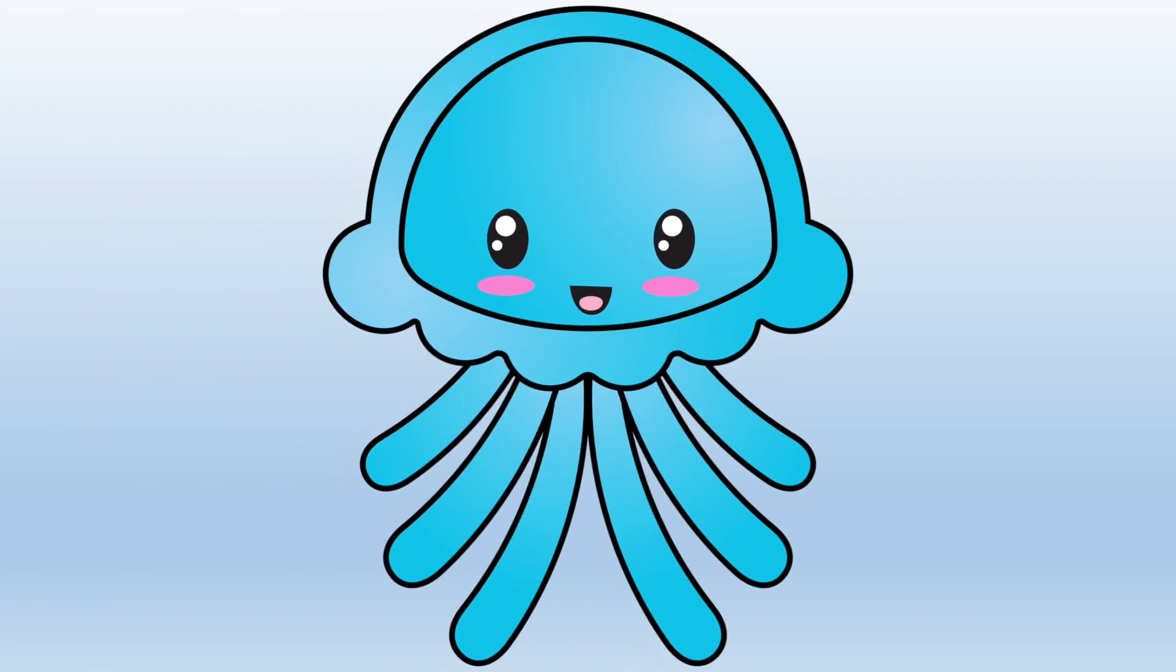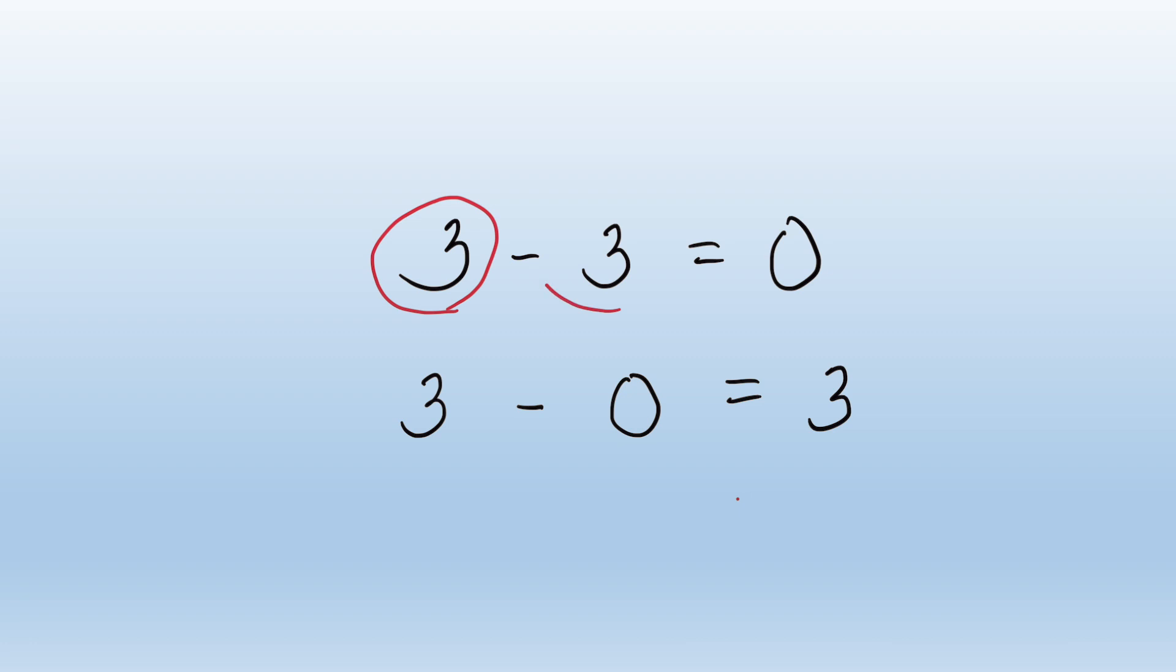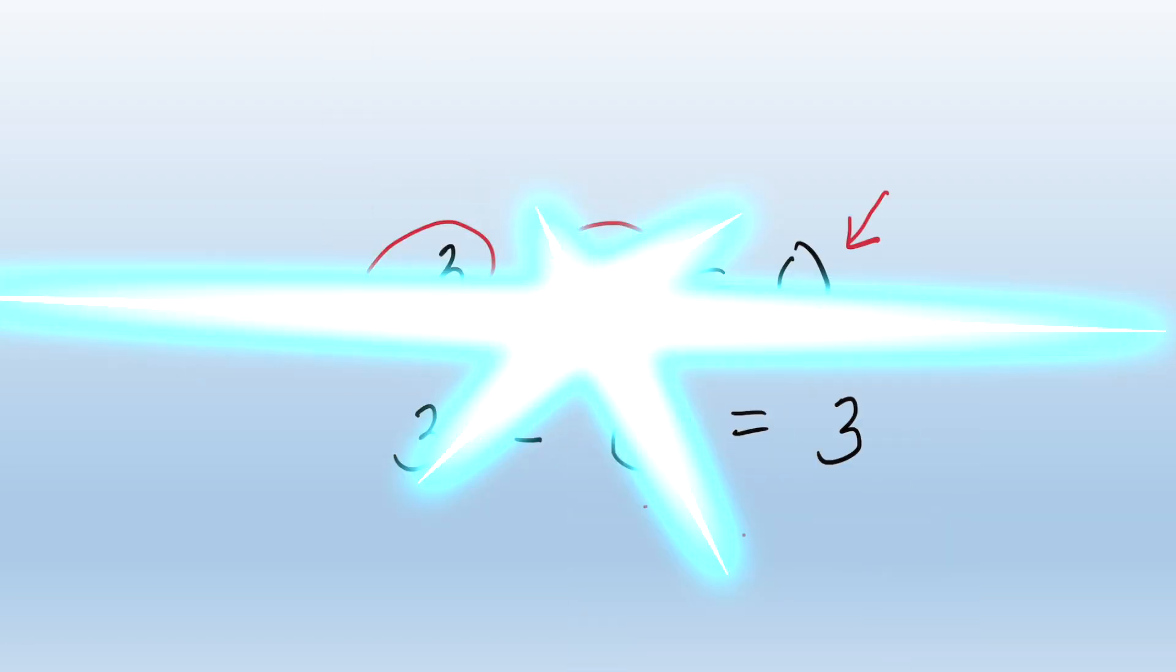And subtraction had a few more surprises. Any number minus itself always equals zero. This is called the zero property of subtraction. And any number minus zero stays the same too. This is the identity property of subtraction.